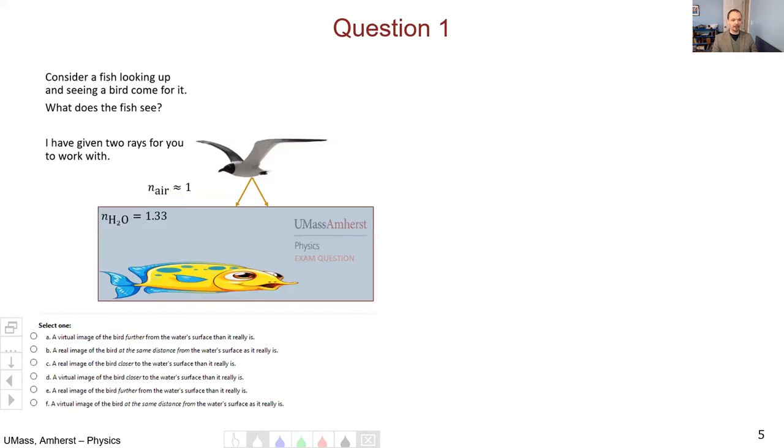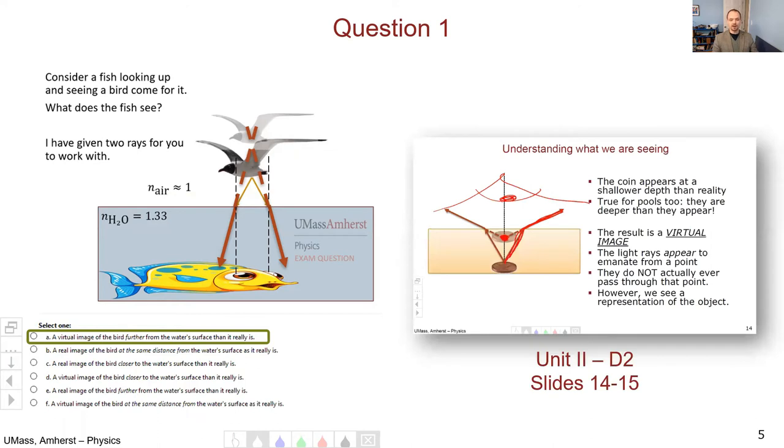Let's begin going through the exam starting with question one about the fish and the bird. The procedure here was for each ray to draw normal. Since I'm going from air to water, the light will bend toward the normal. If we trace those rays backwards, the result is a virtual image further from the water surface than the bird actually is. This is basically what we did on the second day of unit two slides 14 to 15 with the penny and the Karo syrup, but upside down.